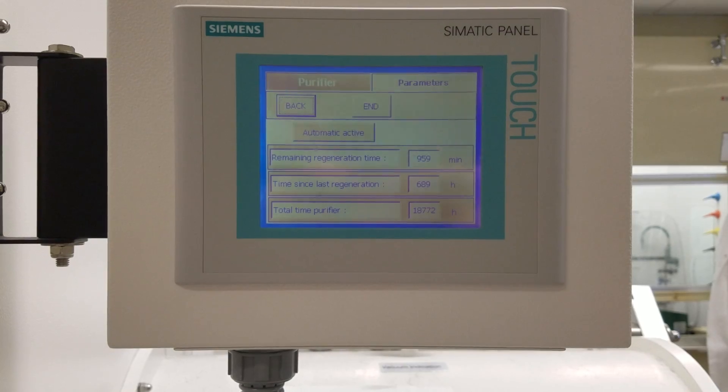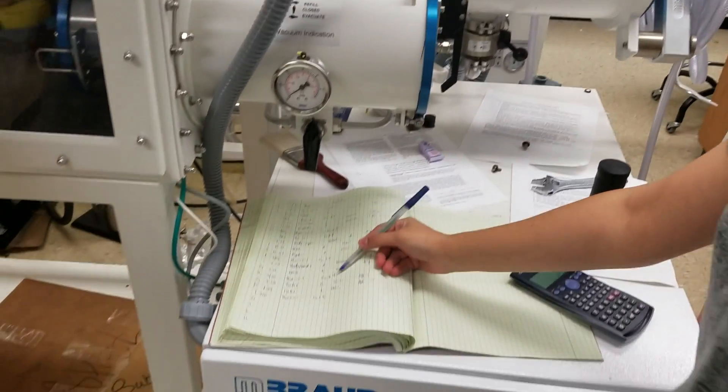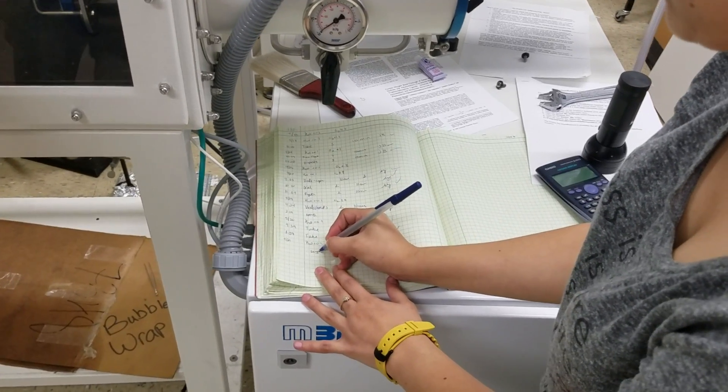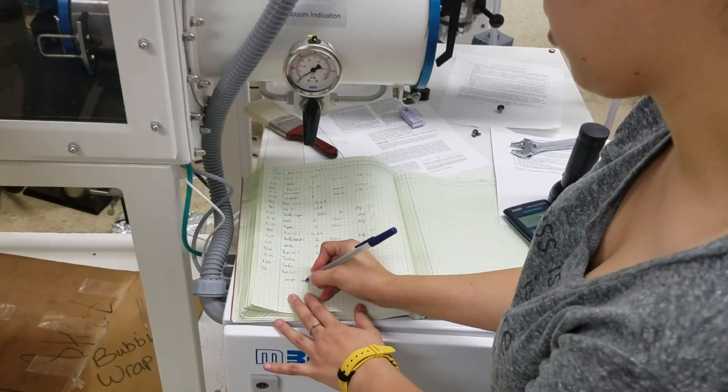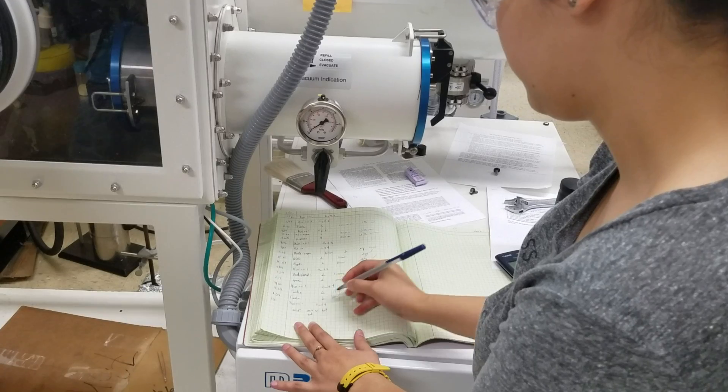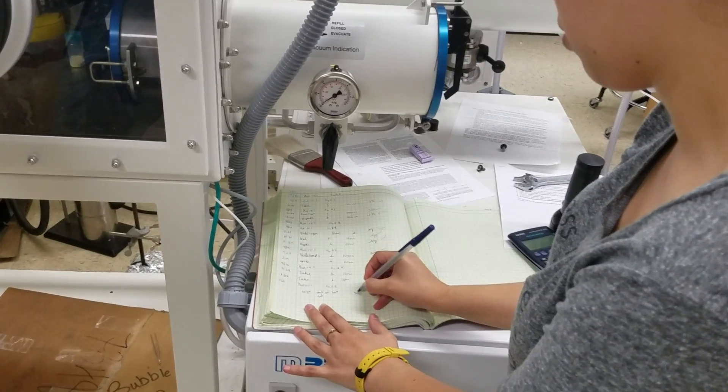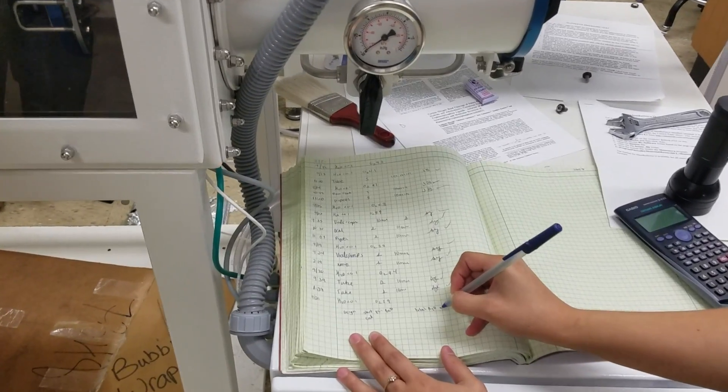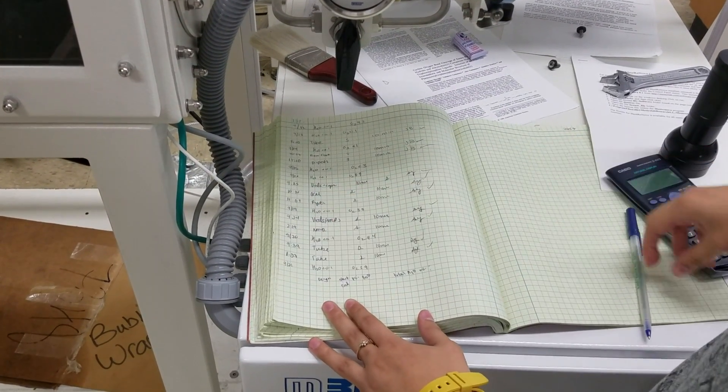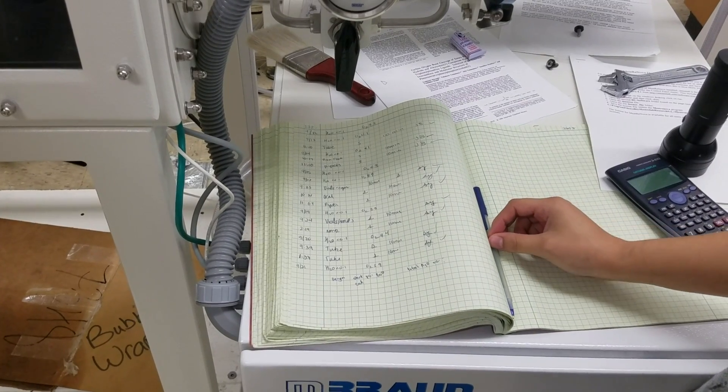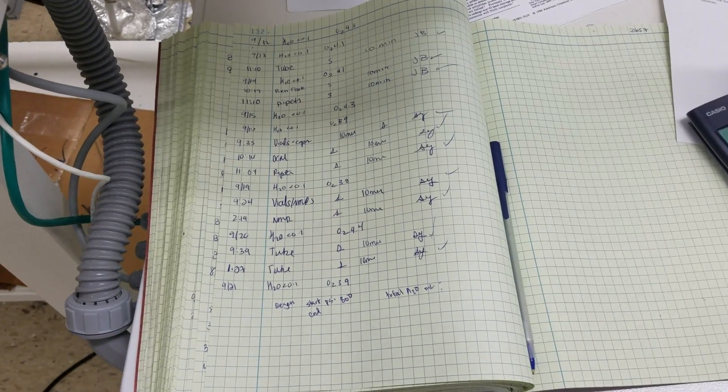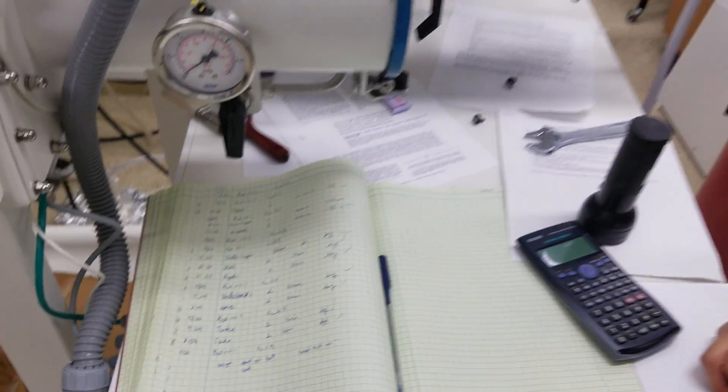Make sure that you document everything in the logbook. So, typically what we do is we write a regeneration, a starting, and an end PSI. In this case, we're about 800, as well as a total water in milliliters when we come back the next day. And so, all of this stuff should be filled out once the regeneration is over. In that case, you just disconnect everything and put everything back. That's about it.